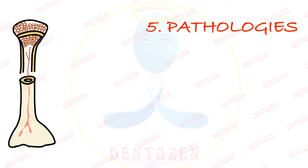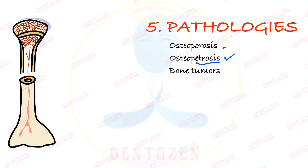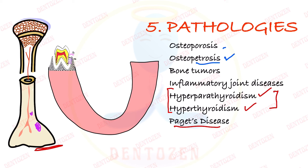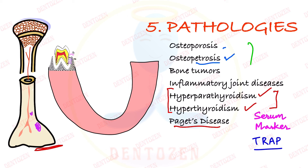Pathologies arising from abnormal bone remodeling include osteoporosis (increased resorption), osteopetrosis (denser bones), bone tumors causing resorption, inflammatory joint diseases, hyperparathyroidism, hyperthyroidism, and Paget's disease (abnormal remodeling) — all of which can occur in jaw bones. Increased bone turnover can be detected using a biological serum marker called TRAP (tartrate-resistant acid phosphatase), whose levels rise with increased turnover.